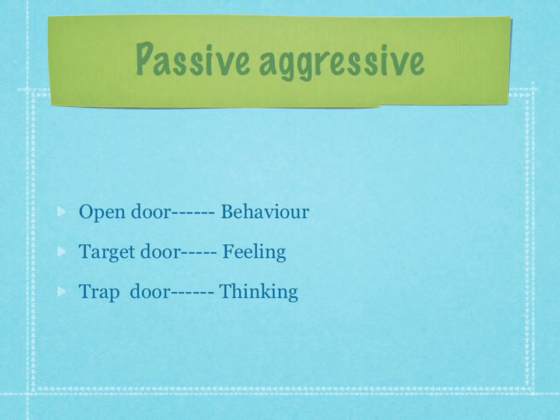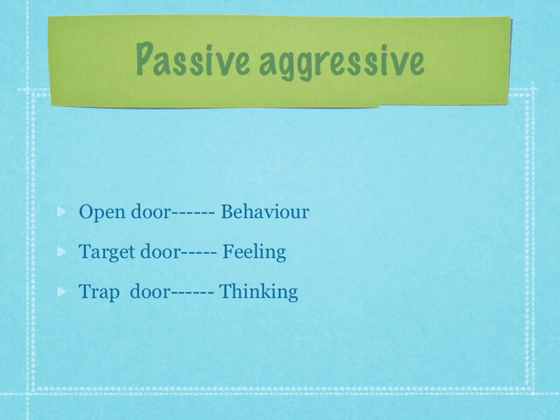The next adaptation is passive-aggressive. These are people who communicate through passive-aggressive processes, often turned inwards — though you know they're angry. Their open door is behaviour. Their target door is feeling. And you keep away from thinking questions. These types of people like to struggle; they get intimacy by struggling. They want you to do their thinking for them, and they need to integrate feeling and thinking.